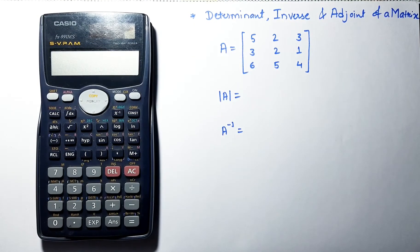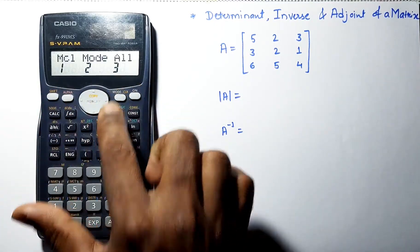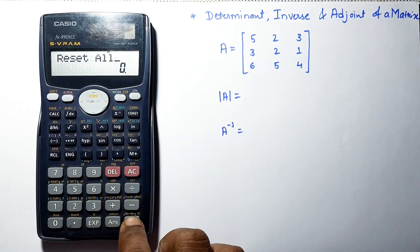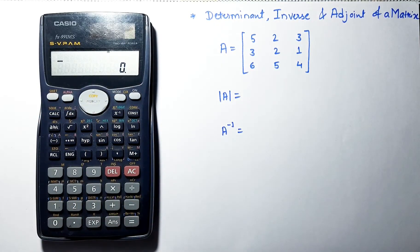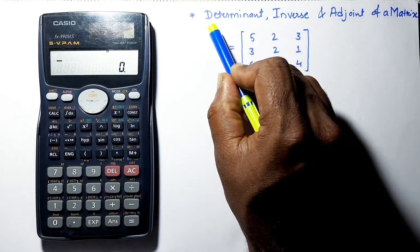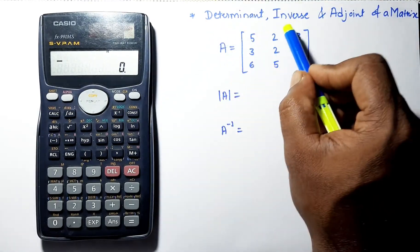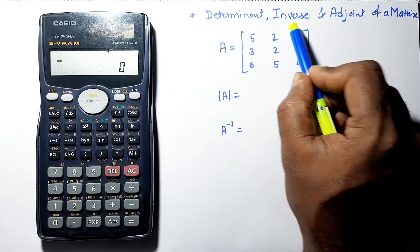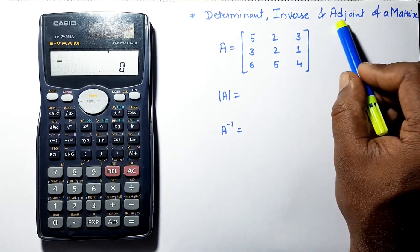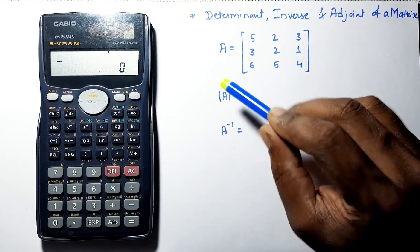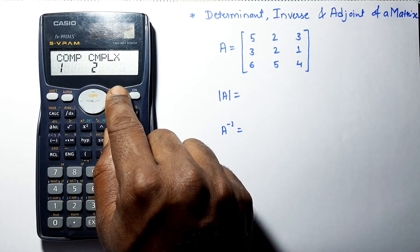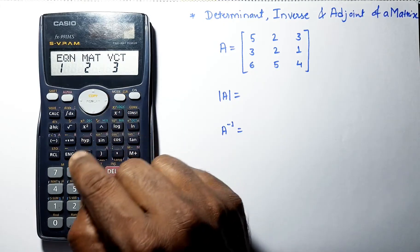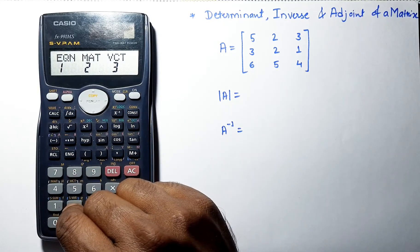Let's reset the calculator first. Now we have to find the determinant, inverse, and adjoint of a given matrix. Go to mode and select matrix.